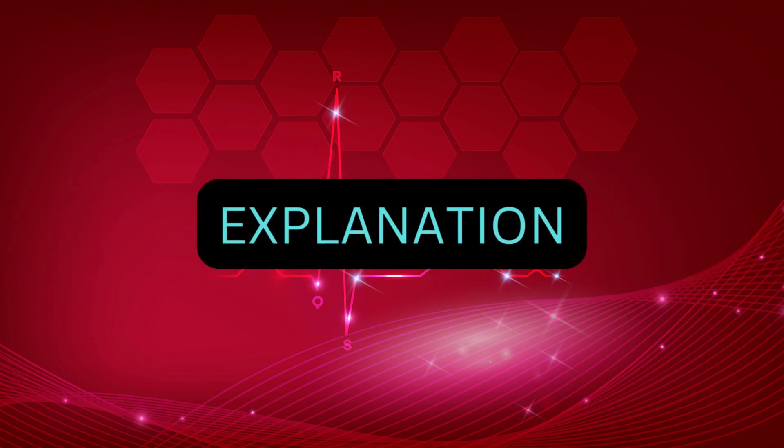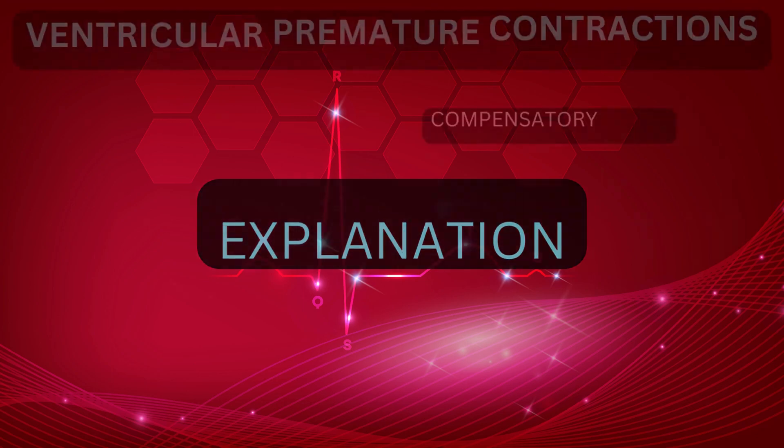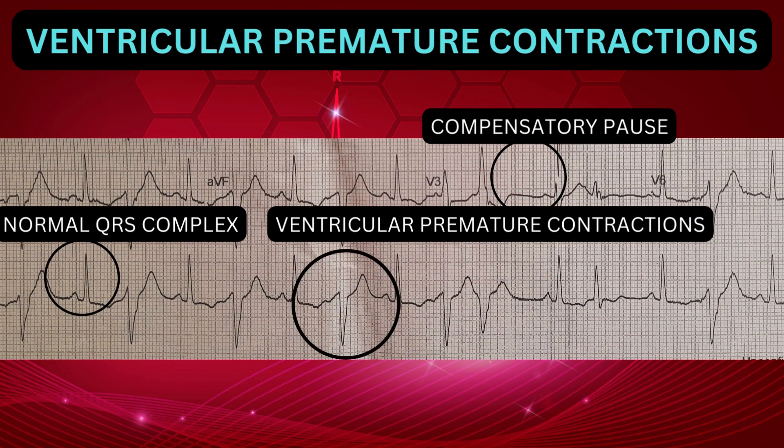We will briefly discuss premature contractions, starting with ventricular premature contractions, which are identified by QRS complexes that have an abnormal shape. They tend to be longer than the normal duration, usually more than 120 milliseconds. These are followed by a compensatory pause. The P wave will be absent and the T wave is commonly large and oriented in the opposite direction to the main deflection of the QRS.